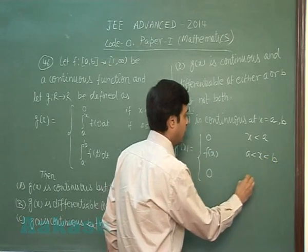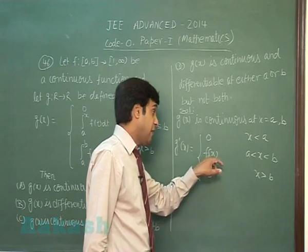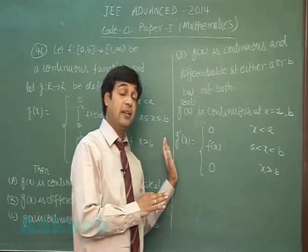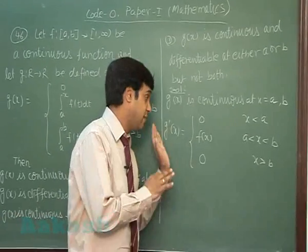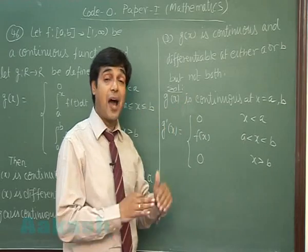Third one, 0. Now if f(a) is 0, f(b) is 0, we can find the derivative as continuous. Means LHD and RHD are equal.